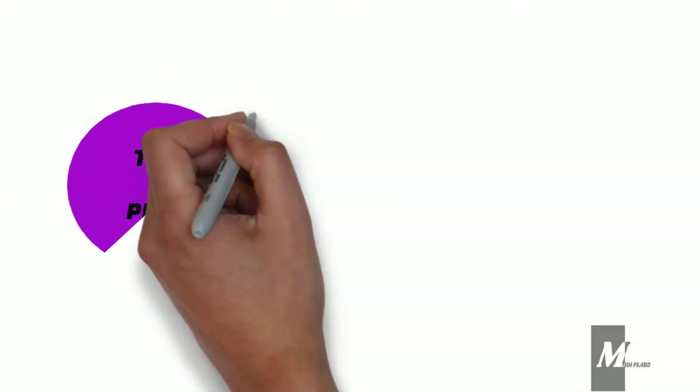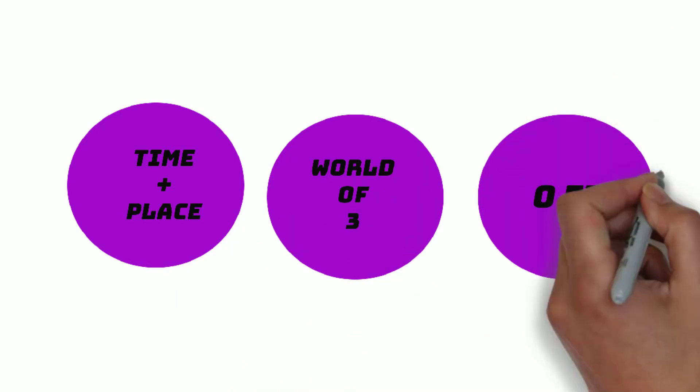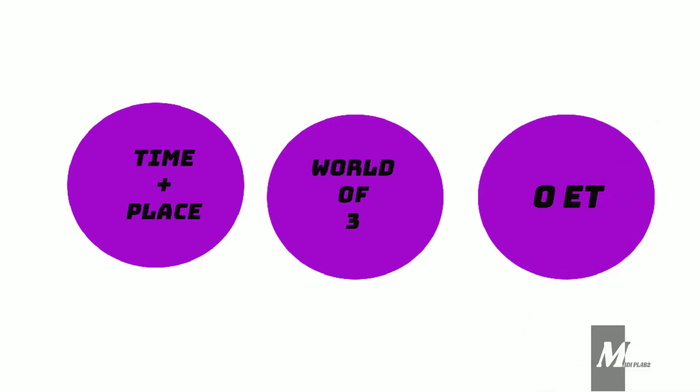First group: time and place. Second group: world of three. Third group: OET.